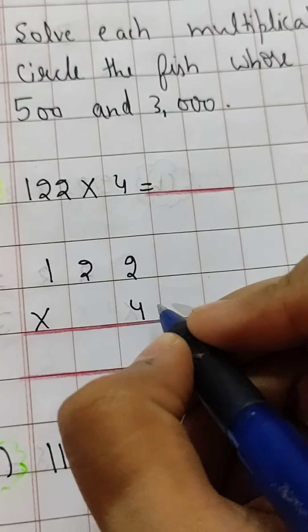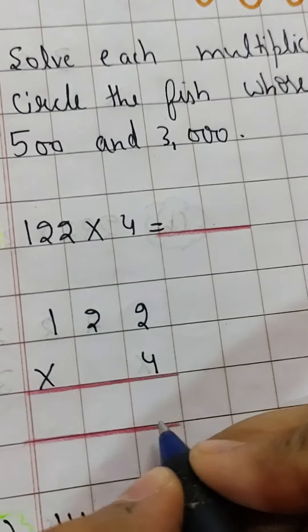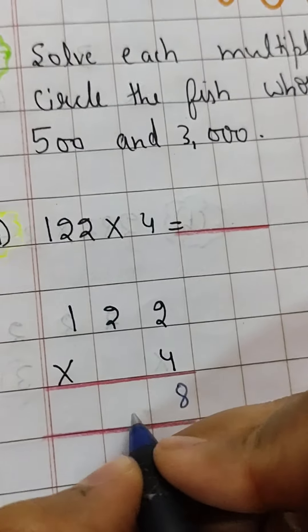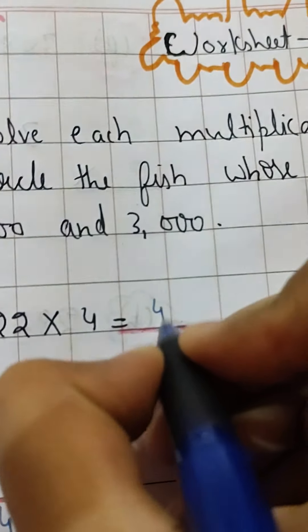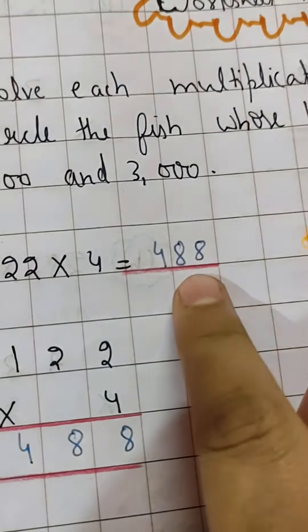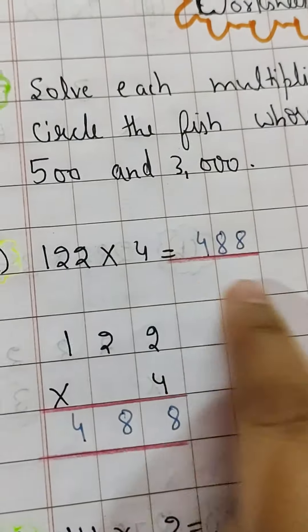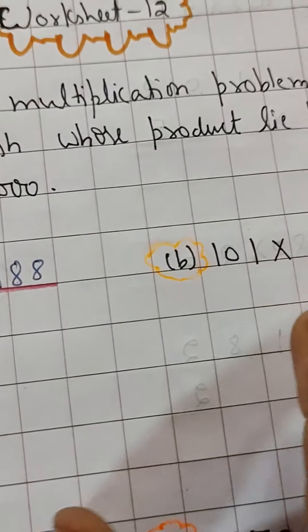You can write it like this. Now firstly normal multiplication we have to do. 122 times 4: 4 times 2 is 8, 4 times 2 is 8, 4 times 1 is 4. So this is the answer 488, but it does not come between 500 to 3000 so we will not circle it.